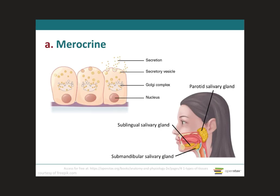Secretions from merocrine glands, also called eccrine glands, are synthesized in the ribosomes attached to the rough endoplasmic reticulum. They're processed, sorted, and packaged by the Golgi complex, then released from the cells in secretory vesicles via exocytosis. Most exocrine glands of the body are this type. Examples include salivary glands and the pancreas. Because these secretory products are released through exocytosis, the cells remain intact.